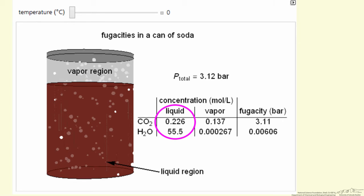In contrast, if we look at the vapor phase now, the concentration of CO2 in the vapor phase is almost three orders of magnitude higher than water. Indeed, these are directly proportional to fugacities.